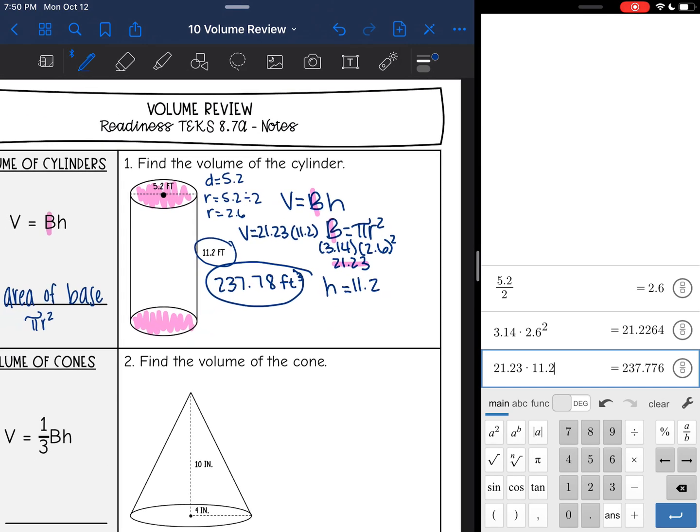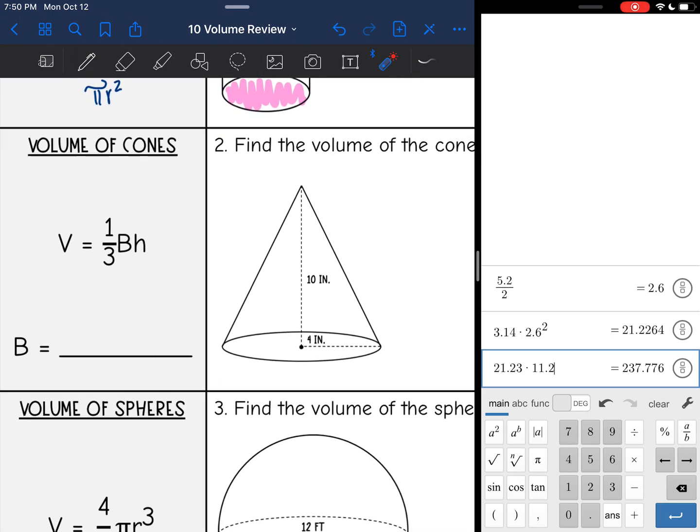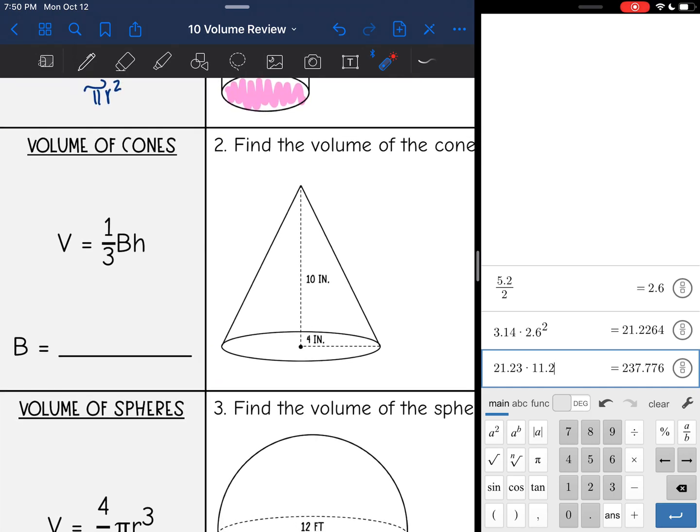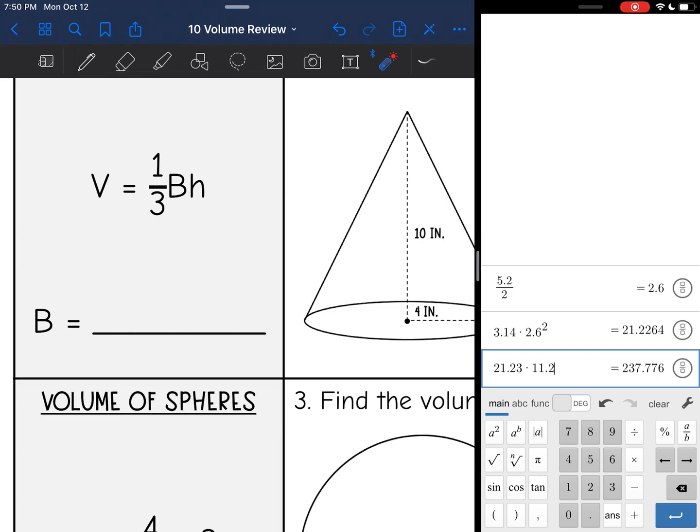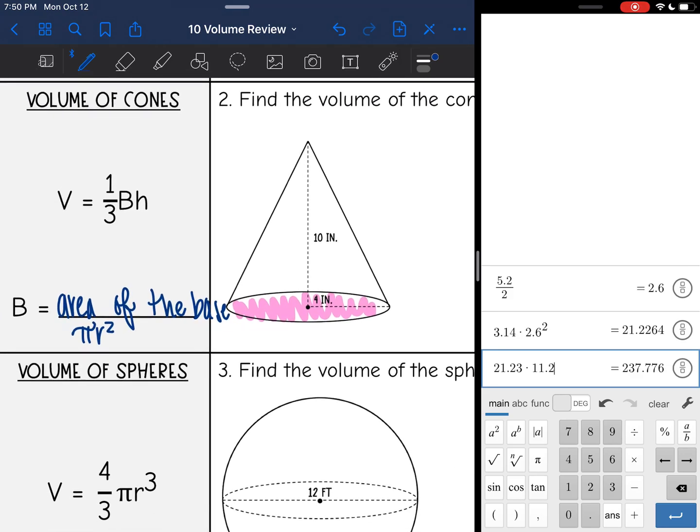Okay, that is volume of a cylinder. Volume of a cone is really similar, except we have this one-third, because the volume of a cone is one-third of a cylinder. And B is still the area of the base. And our base is still a circle in a cone. So that means that I still am going to use pi r squared to find the area of the base.